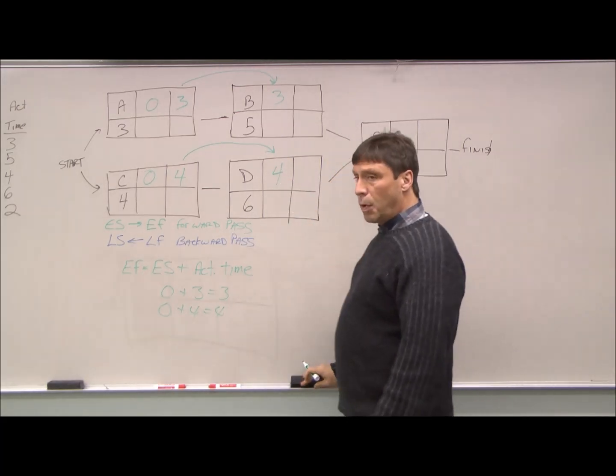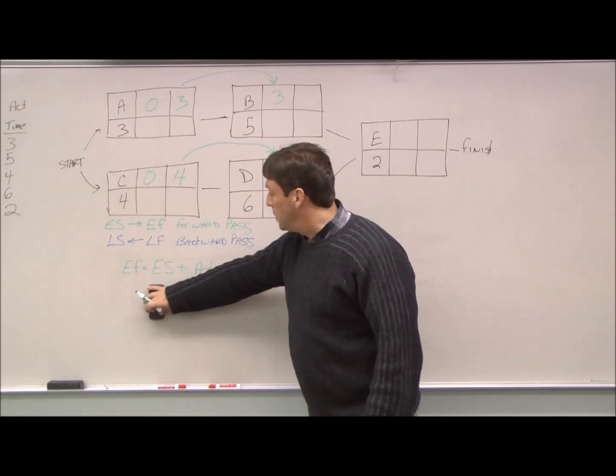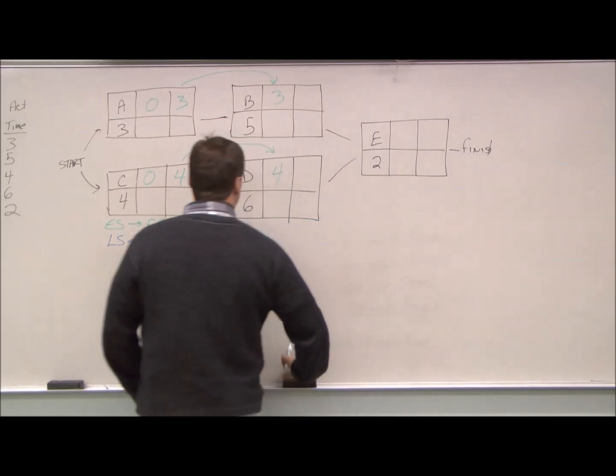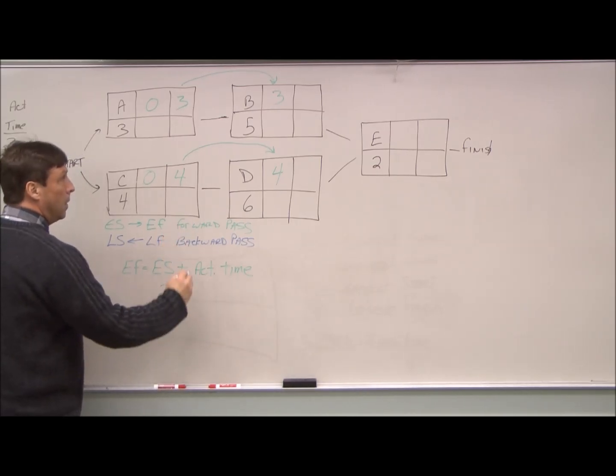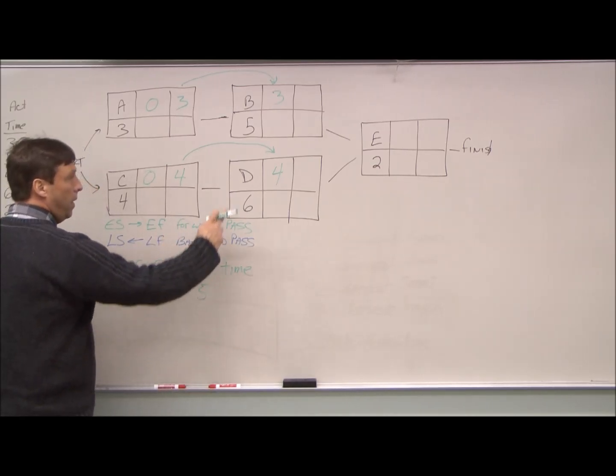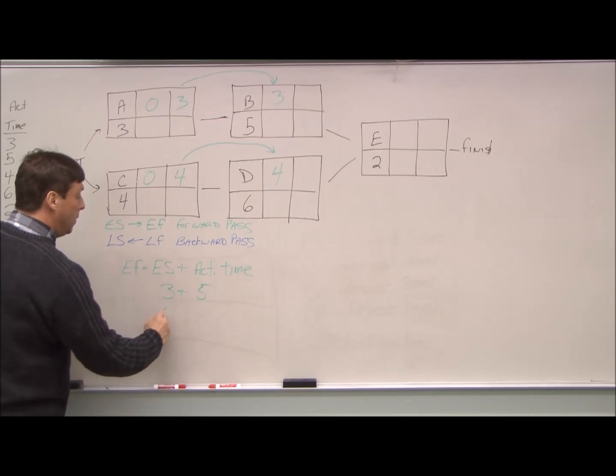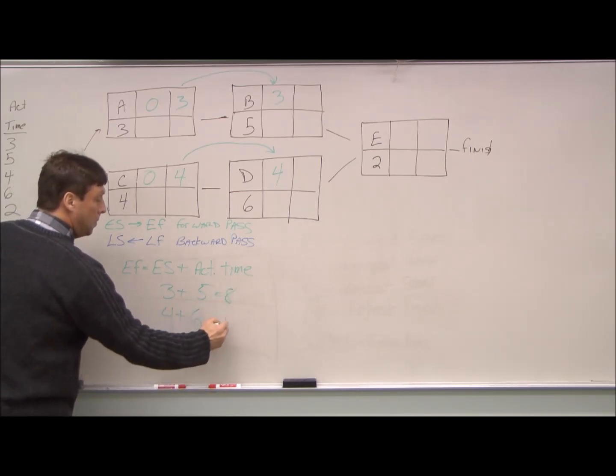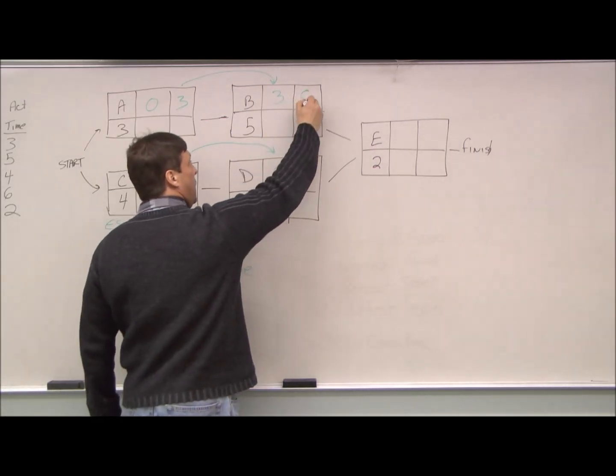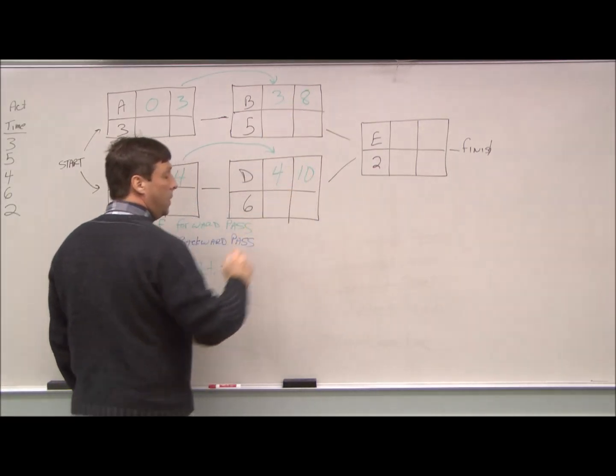Then we go through and we do the same calculation again. For B, our earliest start is three. Our activity time is five. For D, we have four and six. So, eight and ten, respectively.